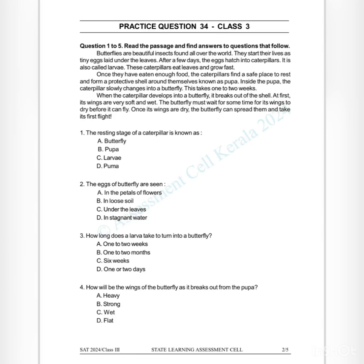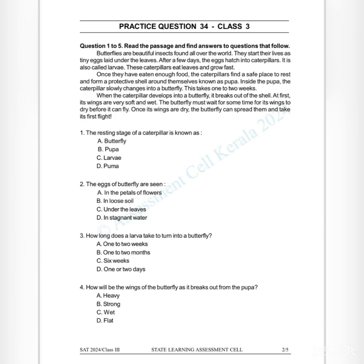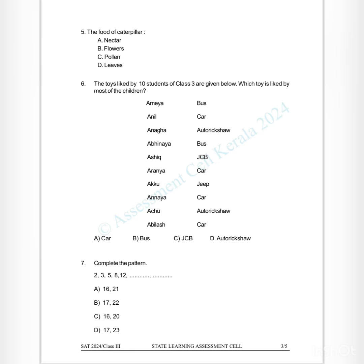Question 3: How long does a larva take to turn into a butterfly? A) one to two weeks, B) one to two months. Question 4: How will the wings of the butterfly be as it breaks out from the pupa? A) heavy, B) strong, C) wet, D) flat. Question 5: The food of the caterpillar — A) nectar, B) flowers, C) pollen, D) leaves. Answer: D) leaves.